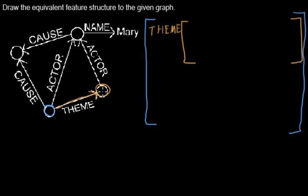Now this node has another outgoing edge with the property ACTOR and it points to another node. So I add a new property ACTOR and the other node is represented by a new pair of brackets.